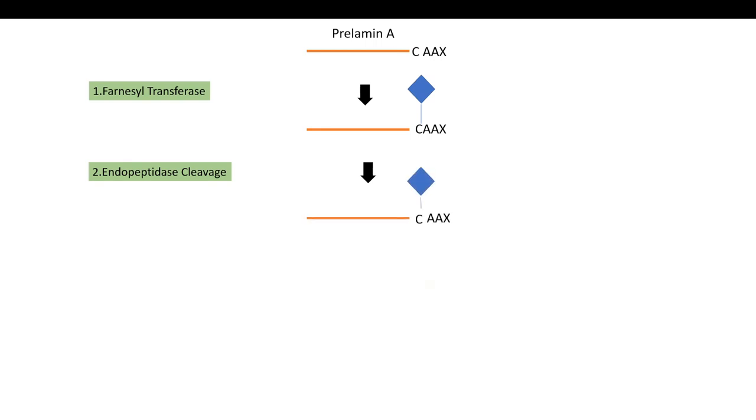So in healthy individuals, the prelamin A which is a protein has an N-terminal end and a C-terminal end. The C-terminal end has a short sequence of 4 amino acids known as CAAX box. Here C stands for cysteine, A for aliphatic amino acid and X can be any amino acid. In the first enzymatic step, a farnesyl transferase attaches a farnesyl group to the cysteine residue at the C-terminal. Once the farnesyl group is attached, the farnesylated cysteine is recognized by an endopeptidase which cleaves the peptide bond just after the cysteine and removes the AAX sequence.